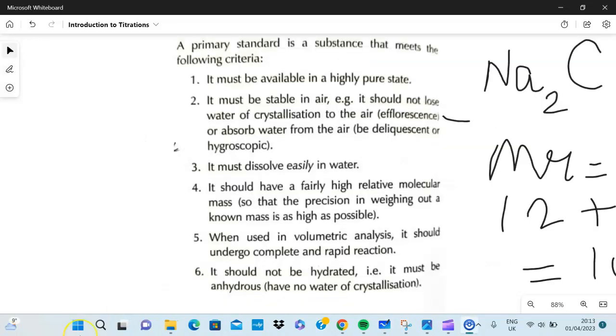For a substance to be a primary standard it must follow these criteria. It must be available in a very pure state. It must be stable in water, so it shouldn't lose any water through efflorescence or absorb water through deliquescence or be hygroscopic.